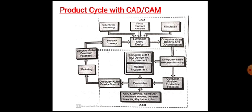Step 5 is computer-assisted production planning, followed by step 6, computer-aided manufacturing. Computers are used in production to monitor and control manufacturing operations. Using the geometric model stored in the CAD/CAM database, tool paths can be automatically regenerated for CNC machines. Computer-controlled robots and material handling equipment are also used in production.